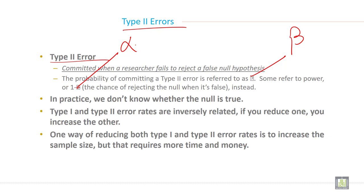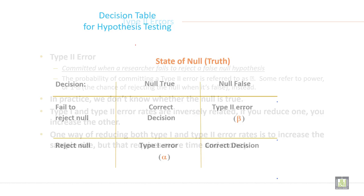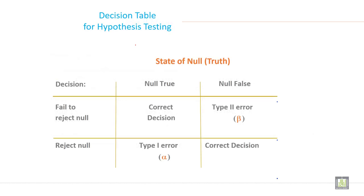One way of reducing both type 1 and type 2 error rates is to increase the sample size, but that requires more time and more money.